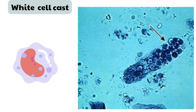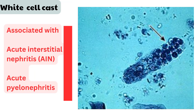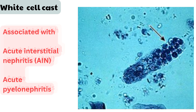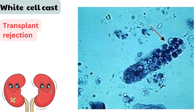Second: white blood cell casts. These are suggestive of acute interstitial nephritis or acute pyelonephritis. Acute interstitial nephritis involves inflammation of the kidney's interstitial tissue, whereas acute pyelonephritis is a bacterial infection of the kidney. WBC casts can also be observed in cases of transplant rejection.